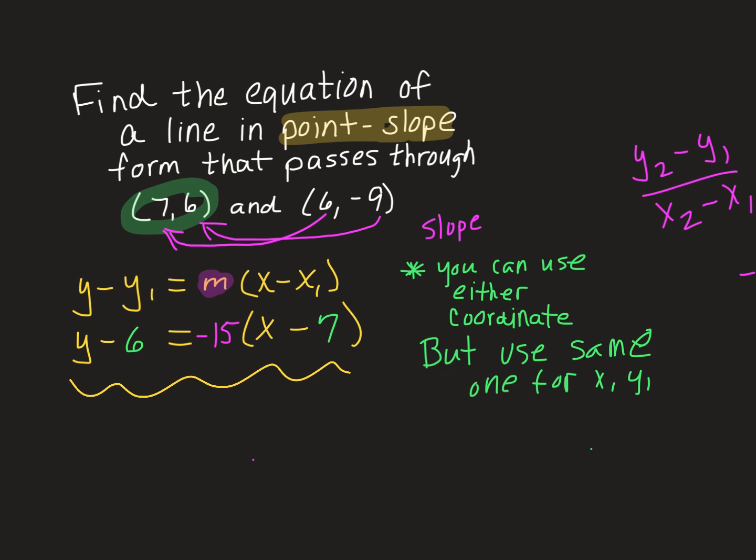But again, I also could have said this. I also could have said y plus 9 equals negative 15 times x minus 6 if I chose to use the second point instead of the first point. But of course, the slope stays the same. So there were two correct right answers for this one.